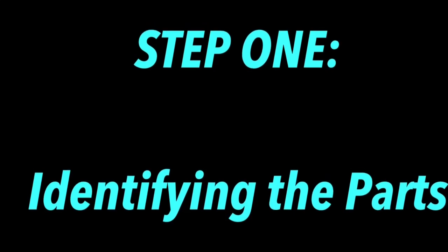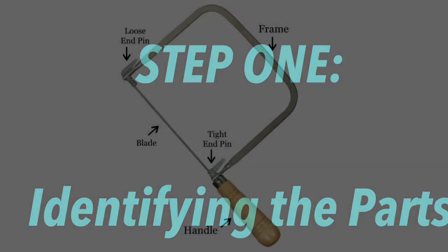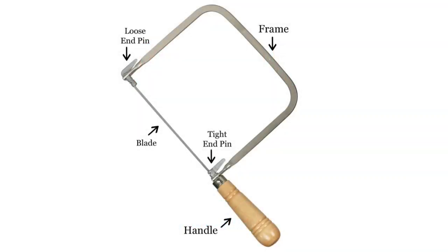Step one, identifying the parts. Your average coping saw looks like this. It has a wooden tapered handle,